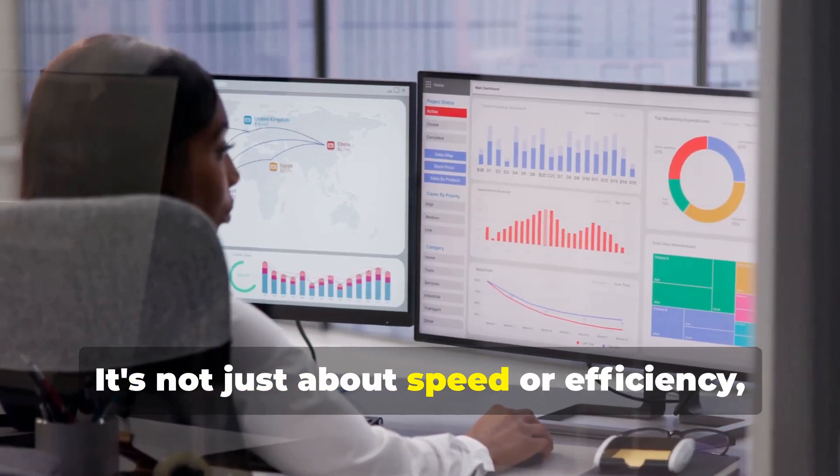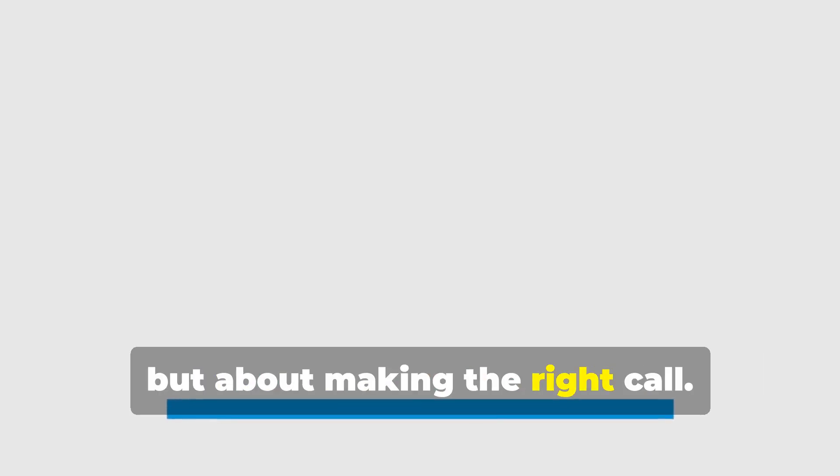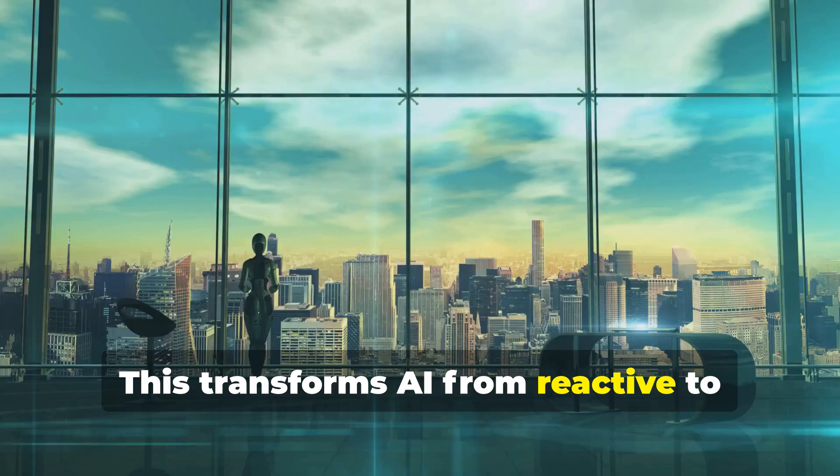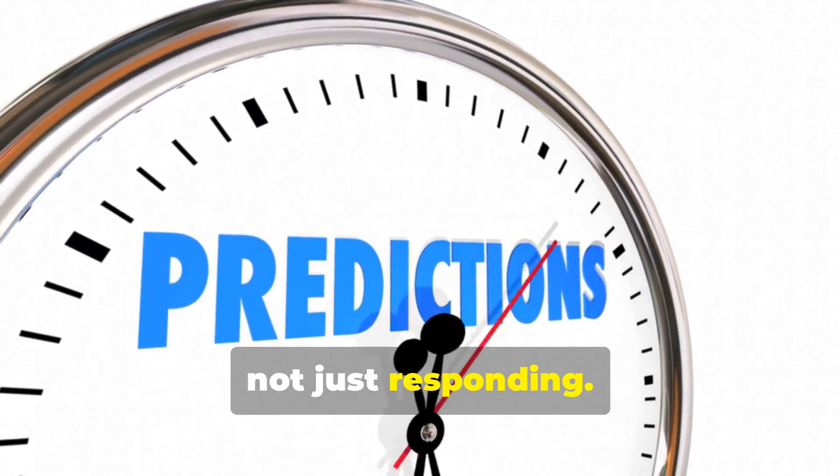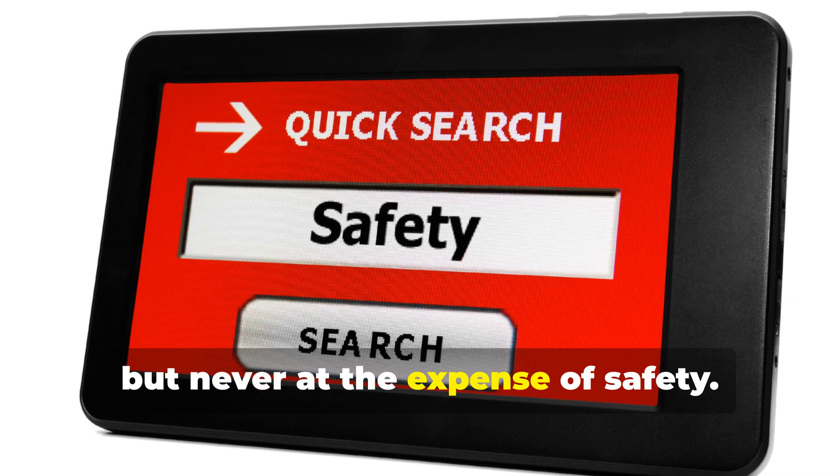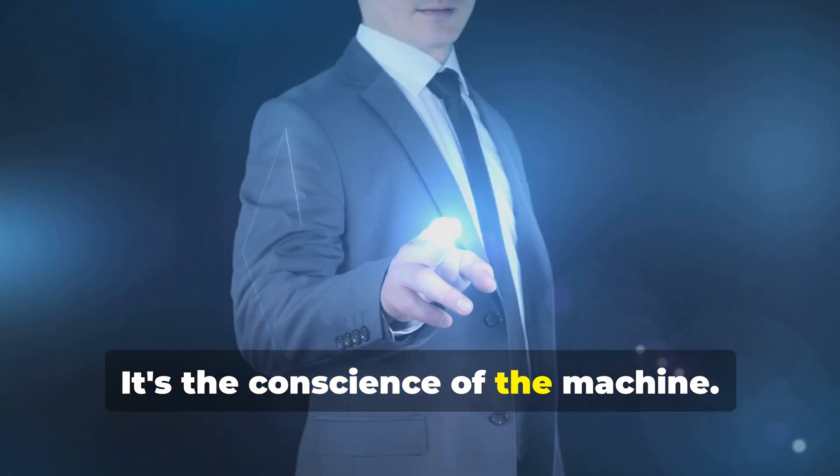It's not just about speed or efficiency, but about making the right call. This transforms AI from reactive to proactive, anticipating consequences, not just responding. The action planner optimizes for goals, but never at the expense of safety. It's the conscience of the machine.